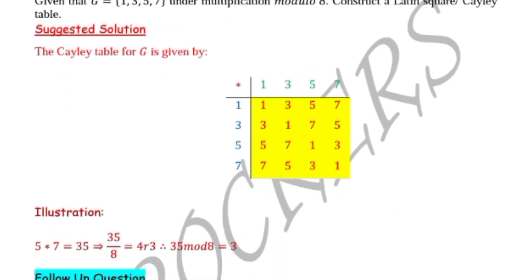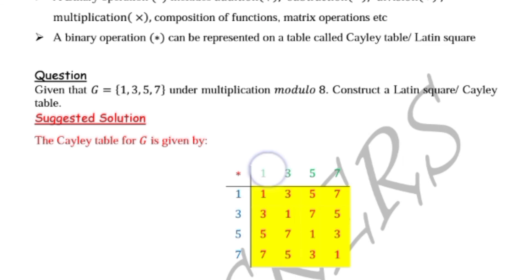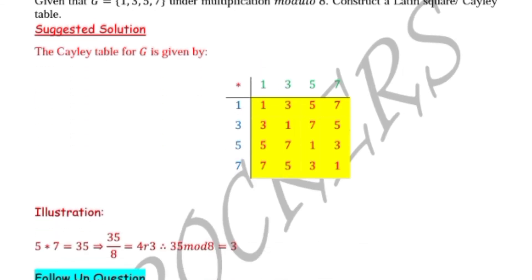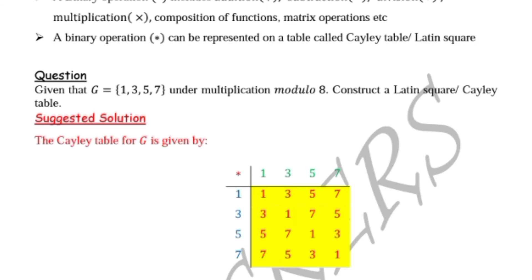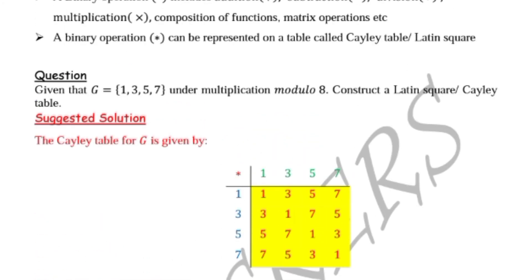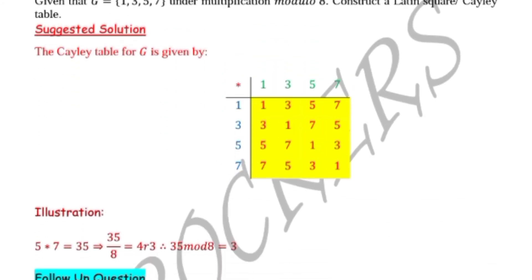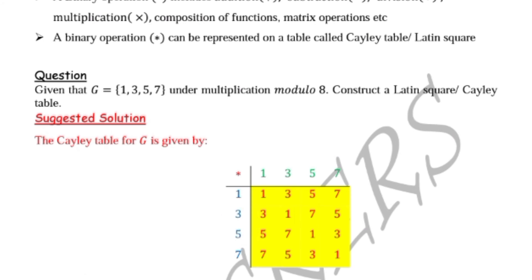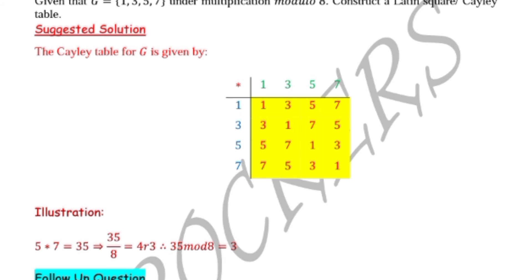Another example: 3 star 1. We get 3 times 1 which is 3, then 3 divided by 8 is 0 remainder 3 — that's how we got this 3. And 5 star 3: 5 times 3 is 15, then 15 divided by 8 is 1 remainder 7, so that's how we got the 7 here.